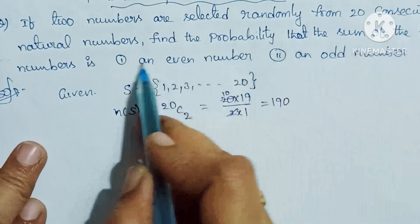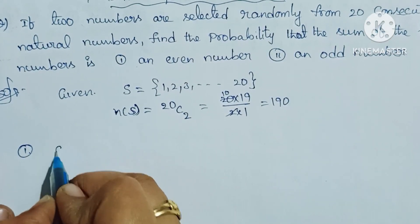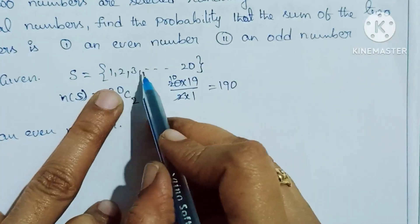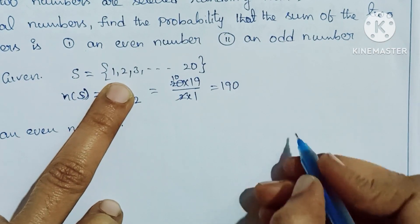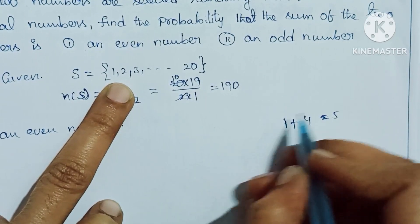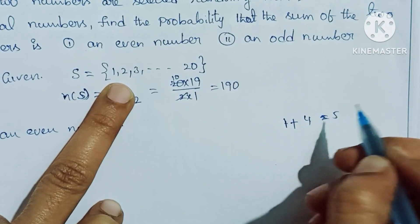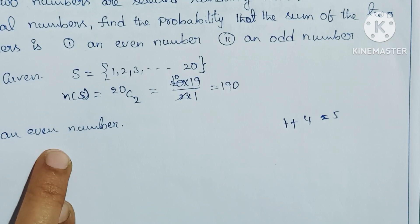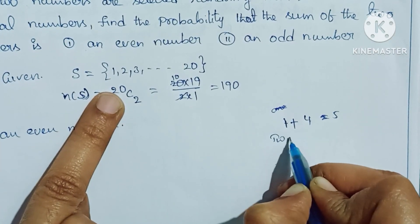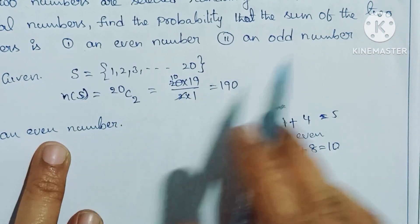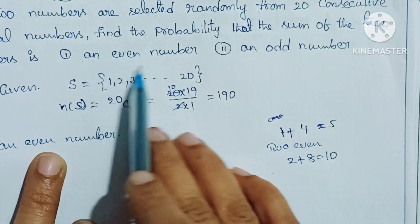First, we choose an even number. The sum of 2 numbers is even when one number is even and the other is odd - that's not possible. For example, 1 plus 4 equals 5, which is odd. We can get an even sum from 2 even numbers, like 2 plus 8 equals 10.